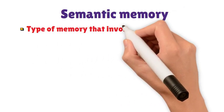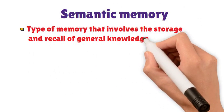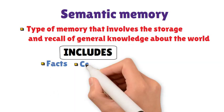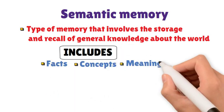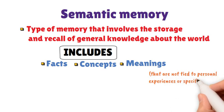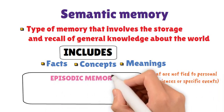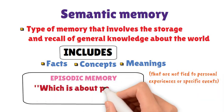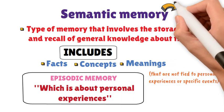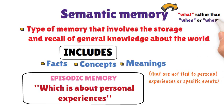Semantic memory is a type of memory that involves the storage and recall of general knowledge about the world. It includes facts, concepts, and meanings that are not tied to personal experiences or specific events. Unlike episodic memory, which is about personal experiences, semantic memory is more about knowing what rather than when or where.